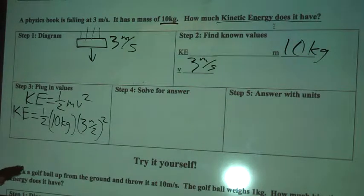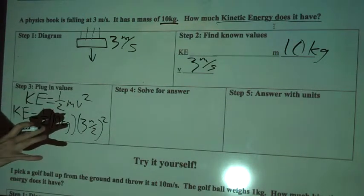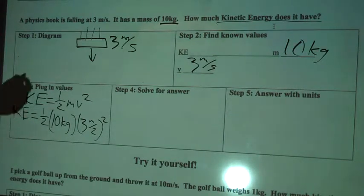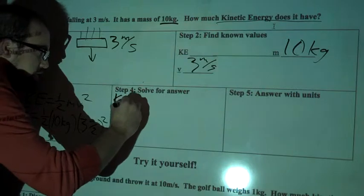This is a little bit more complicated algebraically than the potential energy question, because you have something squared, and then you multiply it by half, so we'll go through it step by step.